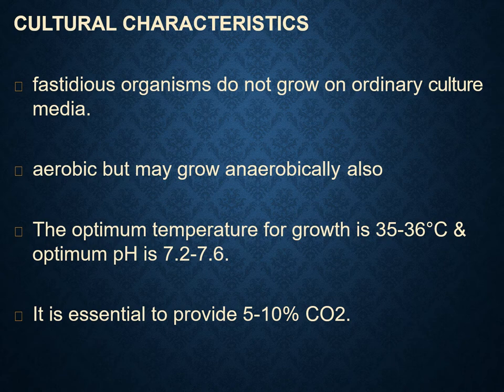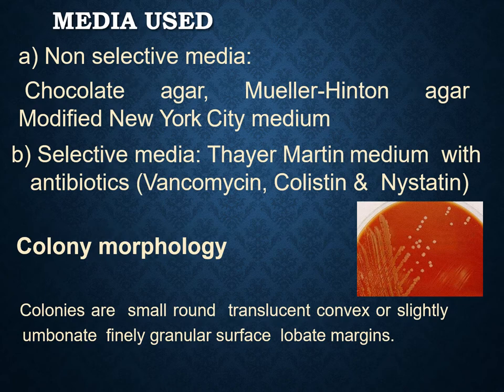The next topic is the cultural characteristics. These organisms are non-motile, so they cannot move on ordinary culture media; they require some special media for their growth. They are aerobic but sometimes may also grow anaerobically. The optimum temperature for growth is about 35 to 36 degrees Celsius, whereas the optimum pH is about 7.6 to 7.7. It is essential to provide 5 to 10 percent carbon dioxide for the growth of this organism.